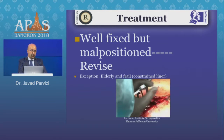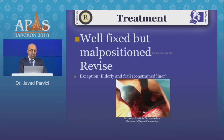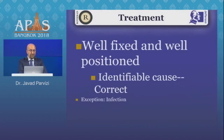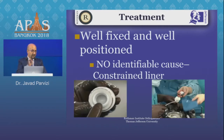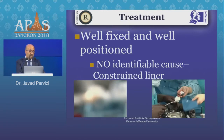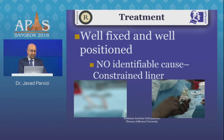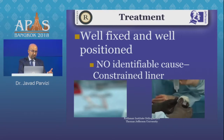To remove a well-fixed component, I use curved osteotomes rather than the explant system, with special instruments to pull the socket out — this allows easy repositioning without bone loss. If you have a well-fixed and well-positioned component with an identifiable cause for instability, correct it. The exception is infection. If there's no identifiable cause and you suspect abductor mechanism insufficiency, you have the option of a constraint liner or dual mobility, though not every cup accepts dual mobility and you may need to remove a well-fixed cup to use it.